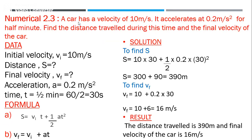Numerical 2.3: A car has a velocity of 10 m/s — since it didn't say the car started from rest, vi = 10 m/s (the car was already moving when observation began). It accelerates at 0.2 m/s² for half a minute. Half a minute = 60/2 = 30 seconds.